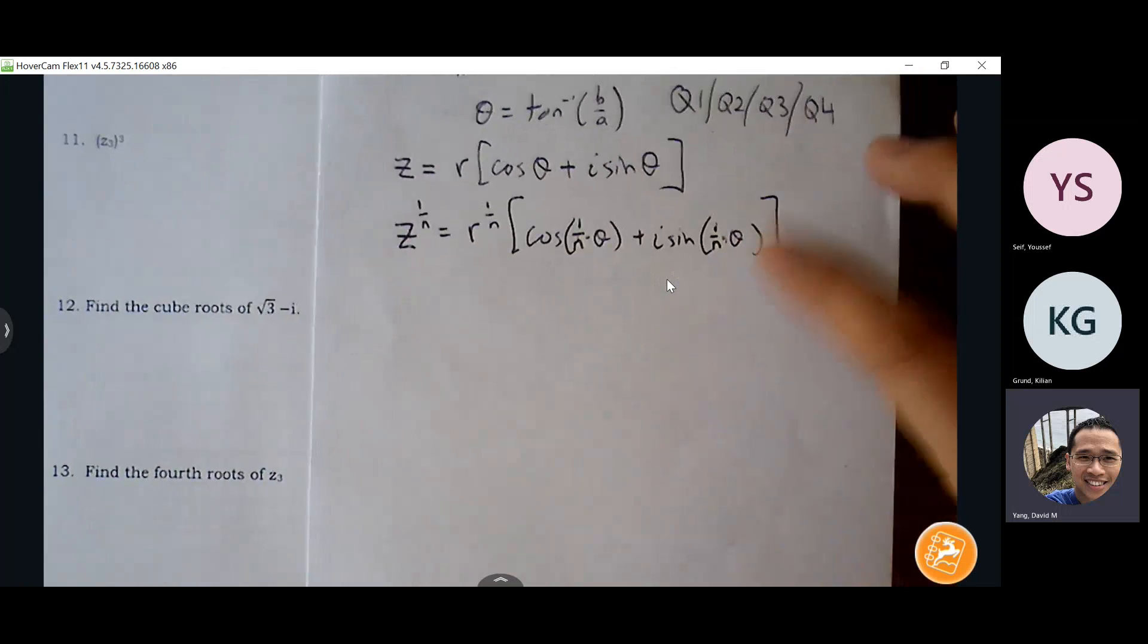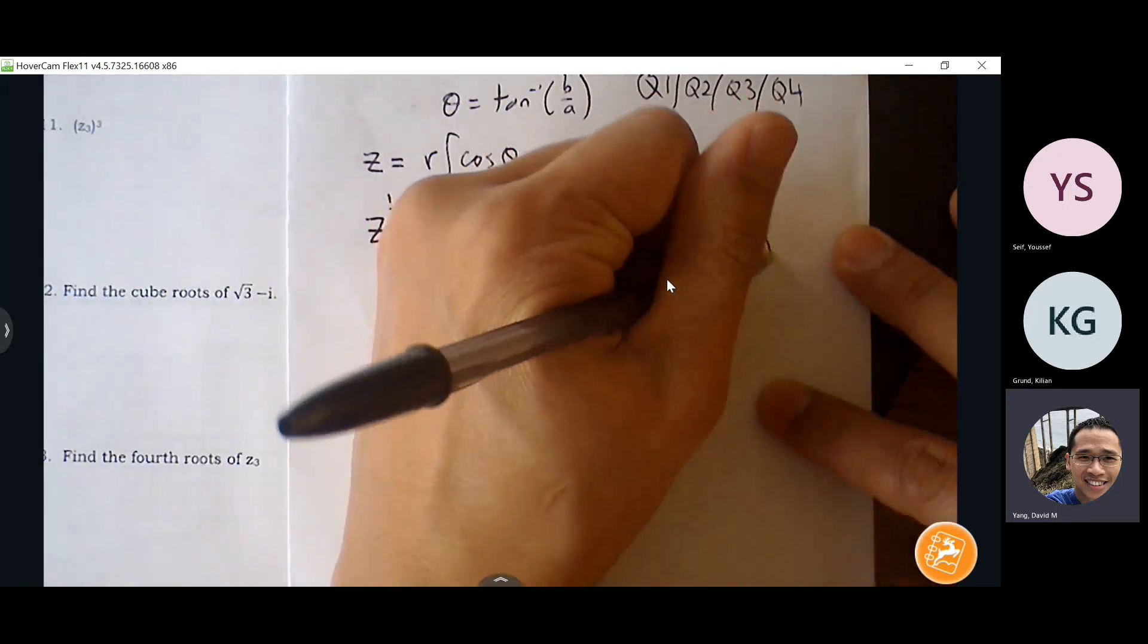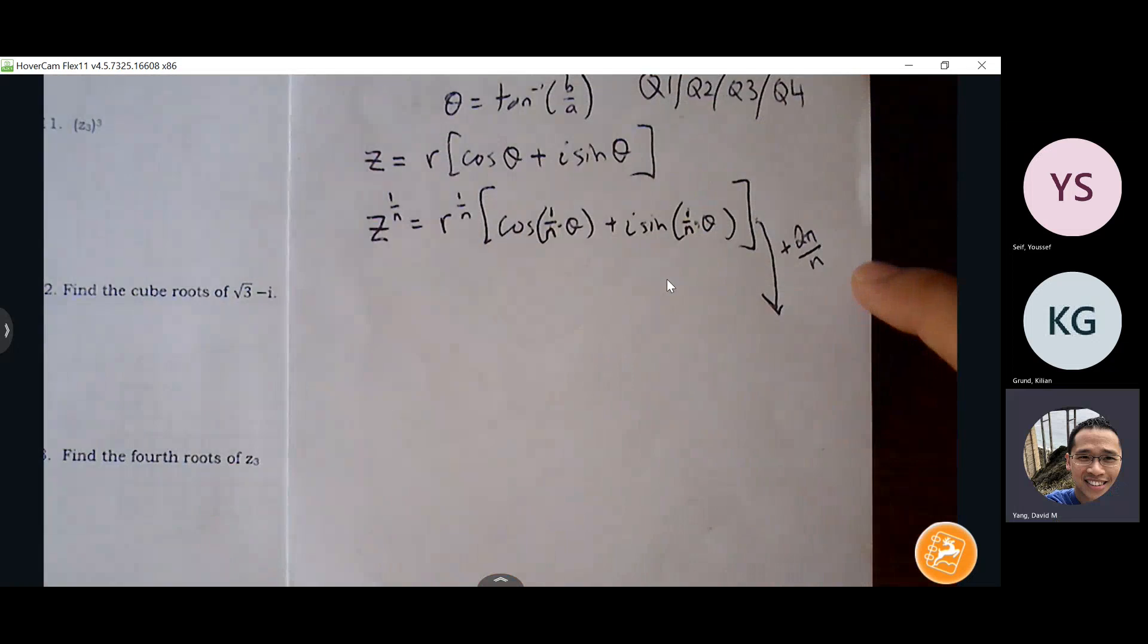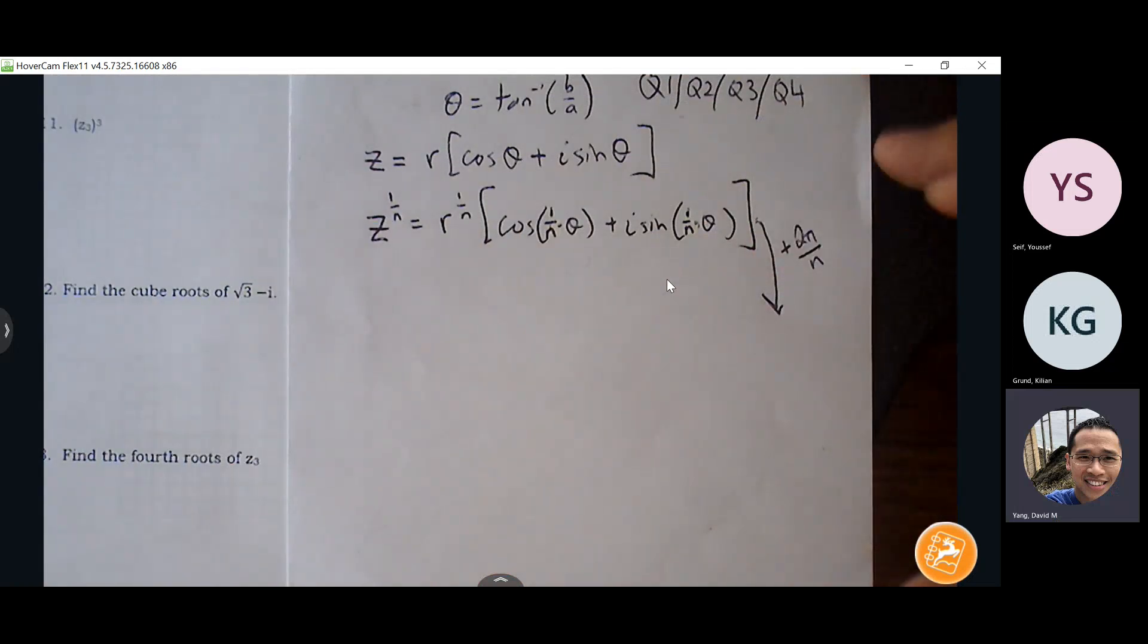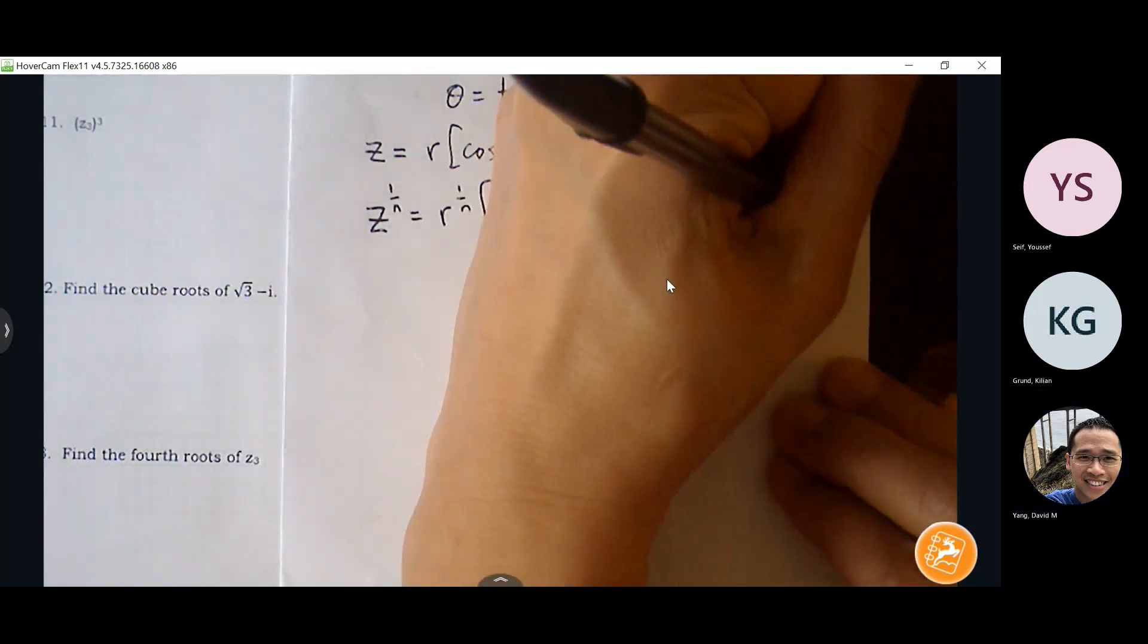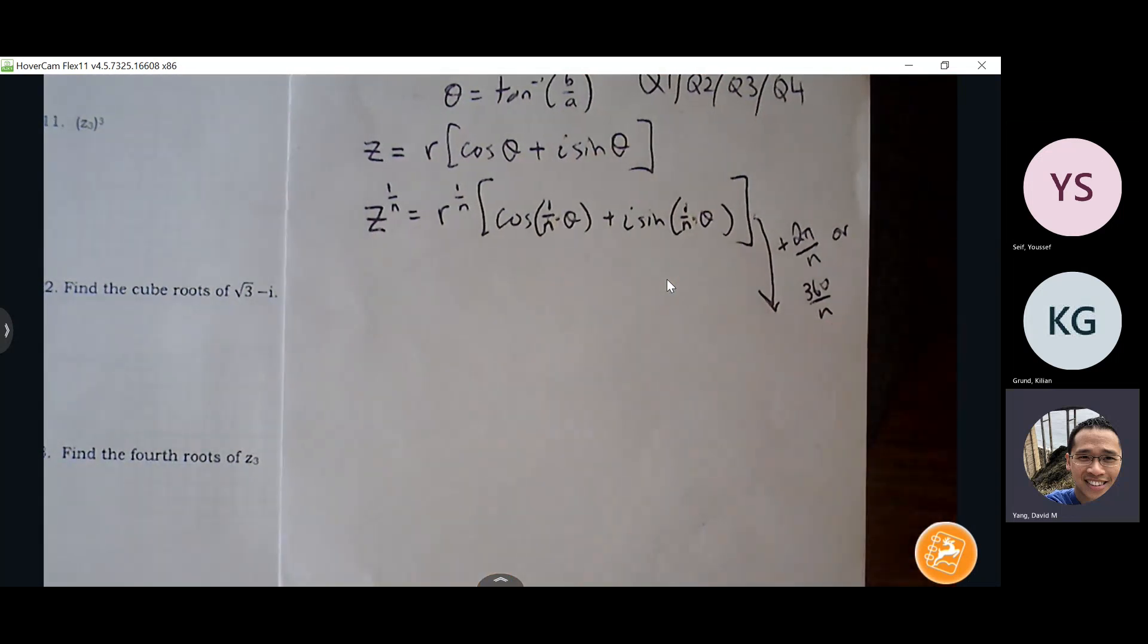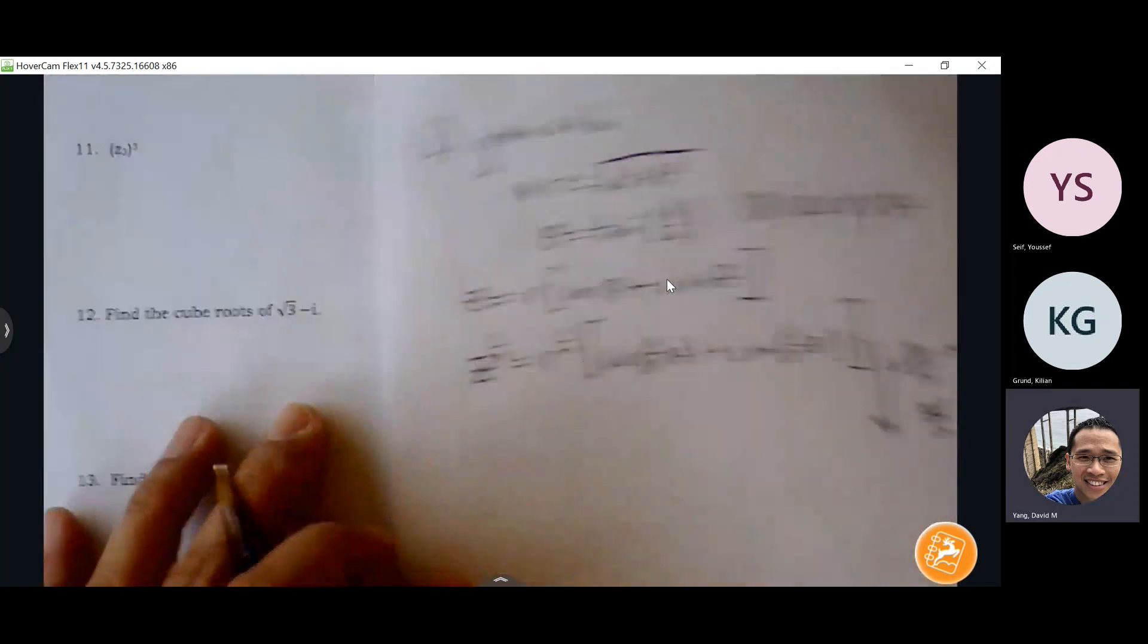Now, after we do this, we have one of the solutions, and then if I want to find the other solutions, I'm going to add two pi over n, and that will allow me to space out all my solutions evenly across my circle. So either two pi over n or 360 over n, depending on which form we're in. Typically we're in radians, so typically we'll use two pi over n. Okay, so I'll refer back to these notes as we go through it. So here's number 12.